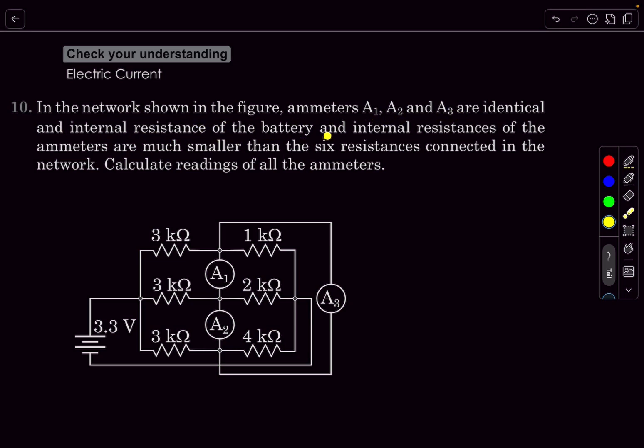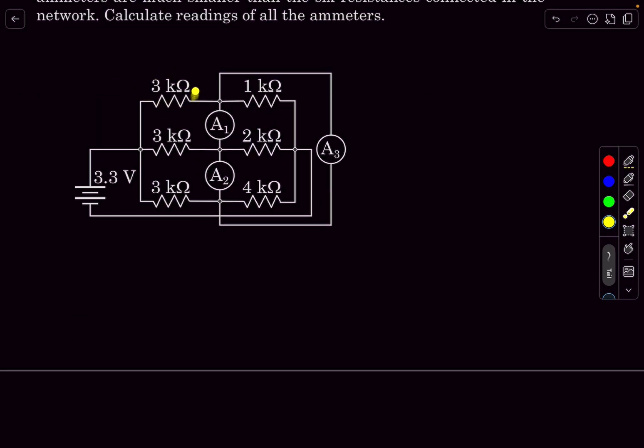And the internal resistance of the battery and the internal resistances of the ammeters are much smaller than the six resistances connected in the network. So calculate the readings of the ammeters. The resistances that are connected are of the order of kilo ohms and we have to ignore the resistance of the ammeter and the battery in comparison to these resistors.